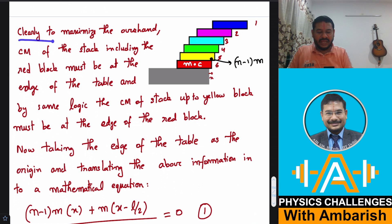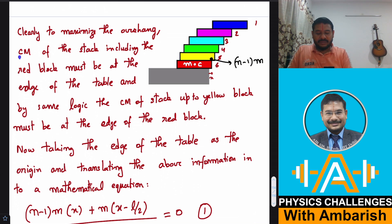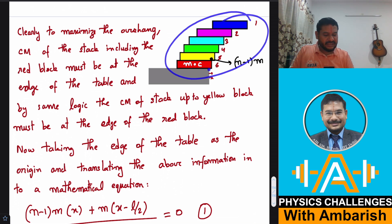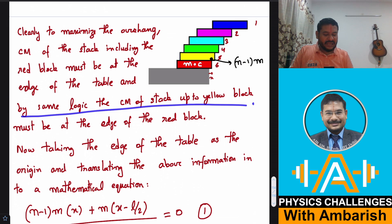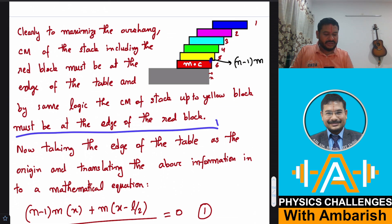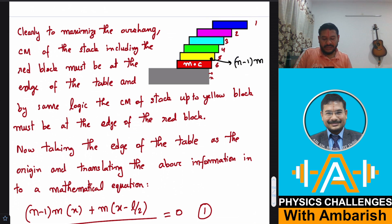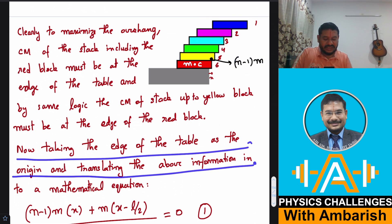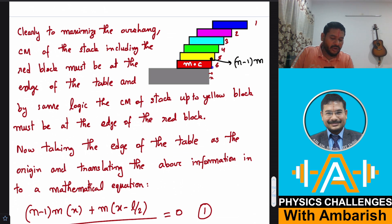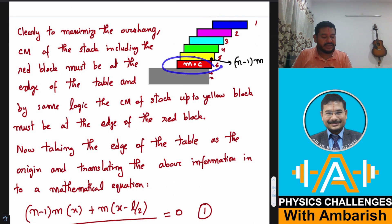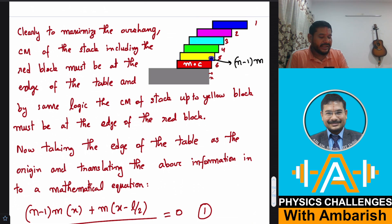Clearly, to maximize the overhang: (1) the CM of the stack including the red block must be at the edge of the table, and (2) the CM of the stack up to the yellow block must be at the edge of the red block. Taking the edge of the table as the origin — let the red block overhang by a distance x, and the center of mass of the system above it is located at coordinate x.